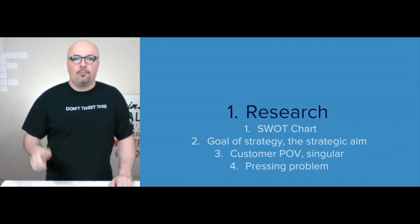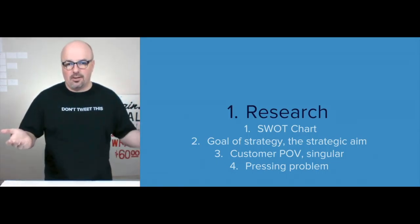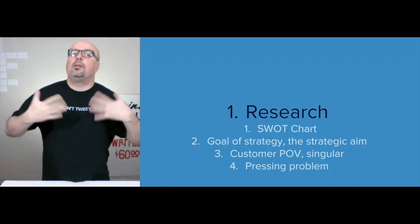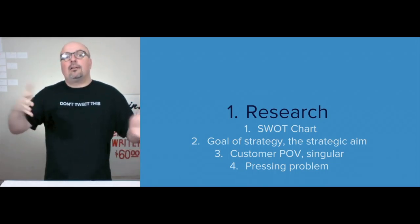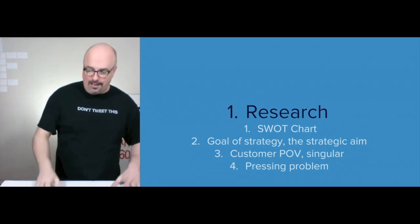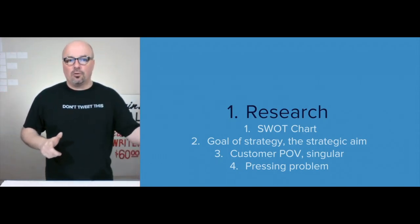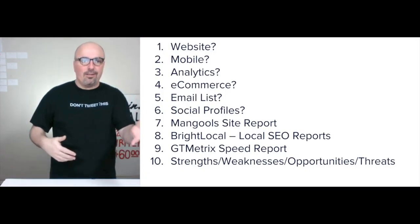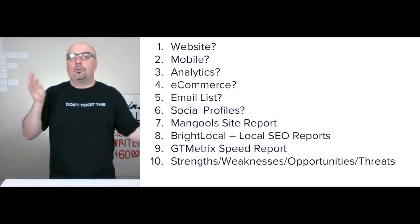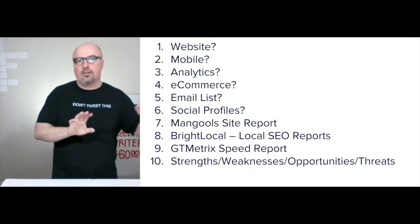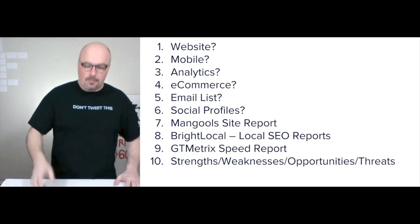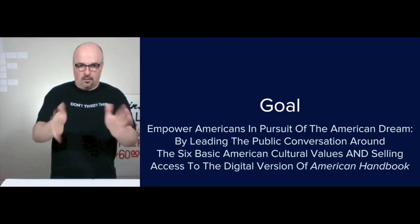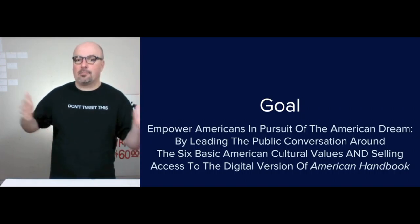So how I organize a digital marketing strategy — there are six parts and we're going to go through each of them. Starting with research, I'm not showing you the SWOT chart, but the goal of the SWOT chart is to inform your decision making for the brand. It's a living document you update over time. We use it to define the goal of the strategy, the customer point of view, and the pressing problem. It covers strengths, weaknesses, opportunities, and threats specific to one brand.